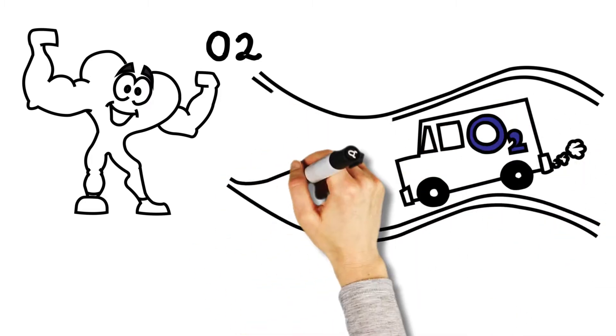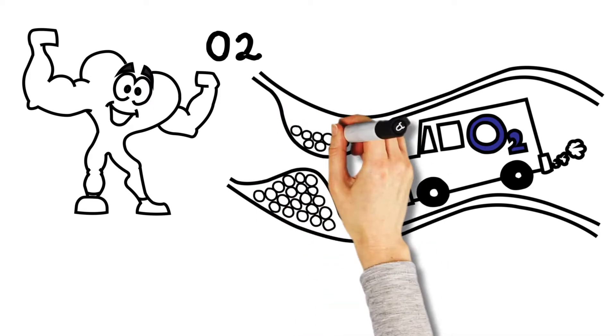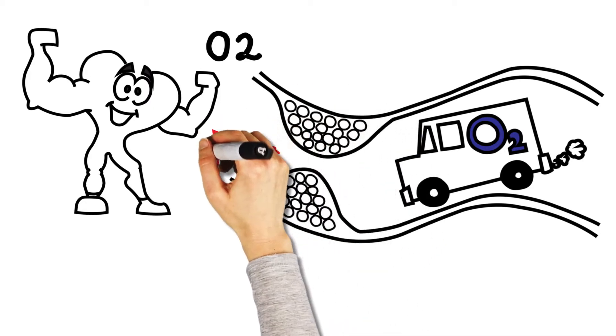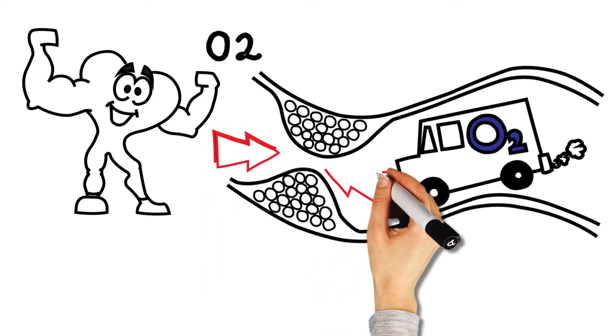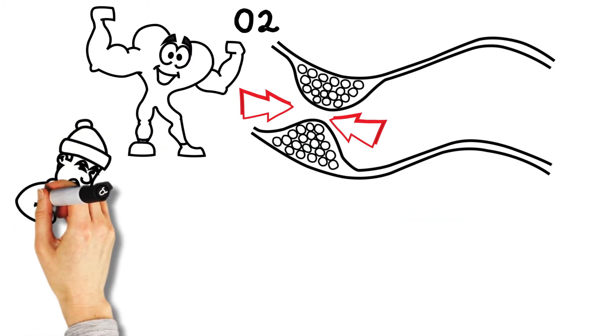Over time, fatty deposits can build up in your arteries causing plaques, also known as blockages. Once a blockage causes a large enough narrowing in the artery, you are at risk of less blood and oxygen reaching parts of the heart, especially when you are active.